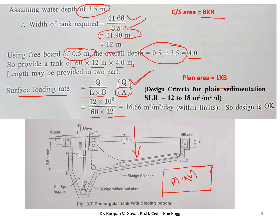Length into breadth is 12 by 60, that is 720 meter square. So we are getting 16.66 meter cube per meter square per day. And this is within limit. And as we know that it should be in the range. And here we have designed length and breadth and height, that is depth, and 0.5 meter is your extra space that is your freeboard, and this design is okay because the surface loading rate is coming within limit.